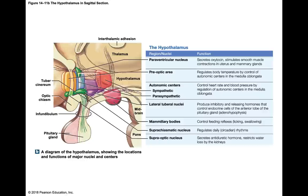The hypothalamus secretes two hormones: ADH (anti-diuretic hormone), which restricts water loss at the kidneys, and oxytocin, which contracts the uterus and mammary glands during labor or breastfeeding in females, and contracts the prostate gland to release secretions in males. The hypothalamus also regulates body temperature (thermal regulation) — if body temperature falls, peripheral blood vessels in the skin constrict to reduce heat loss at the skin surface.